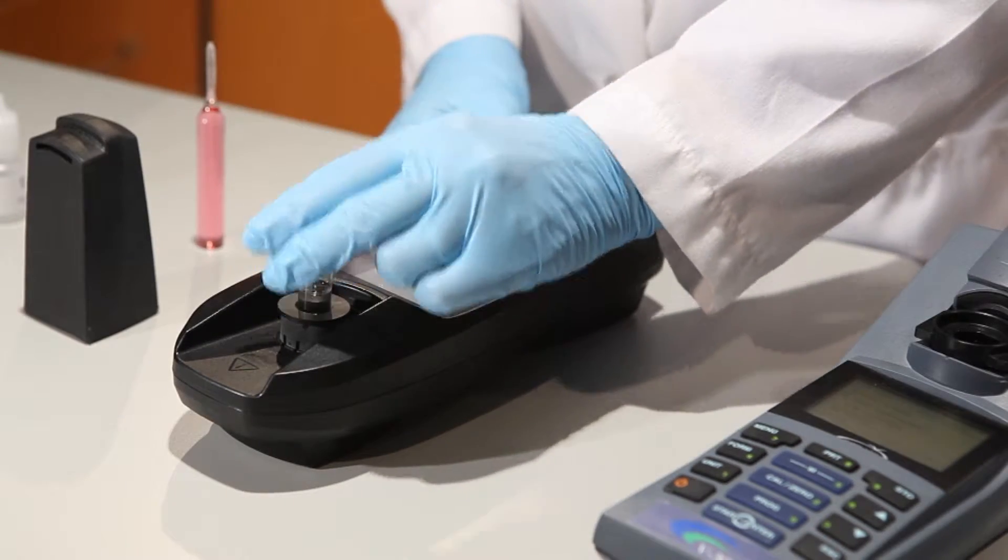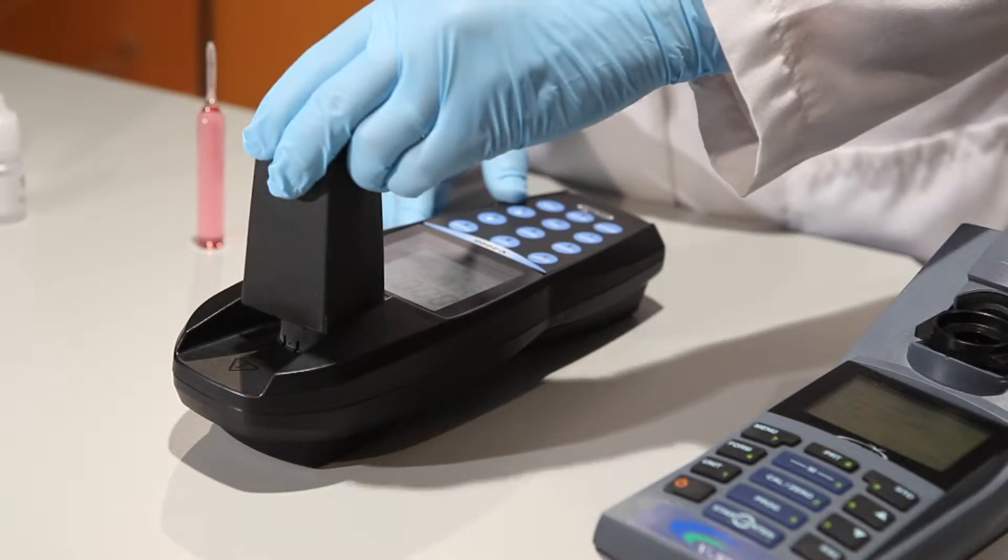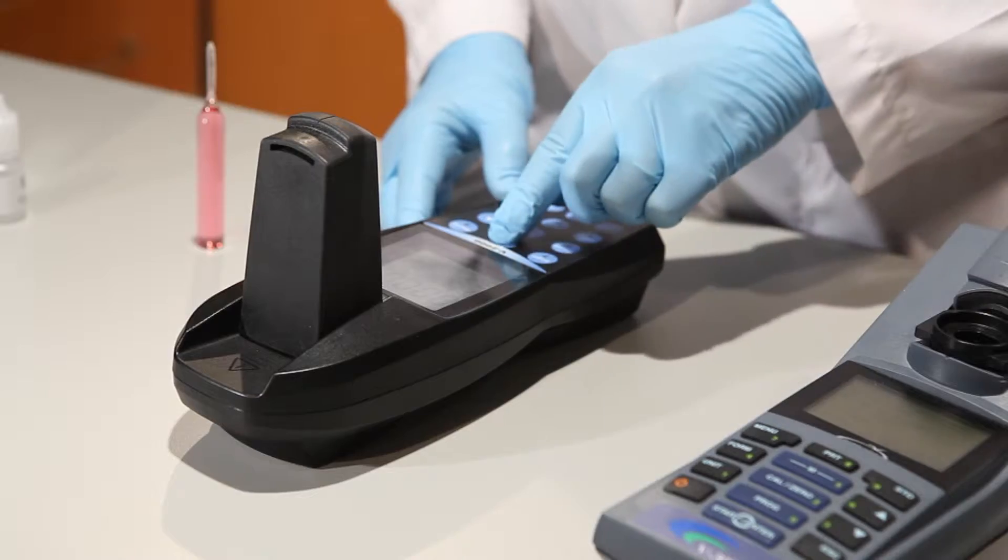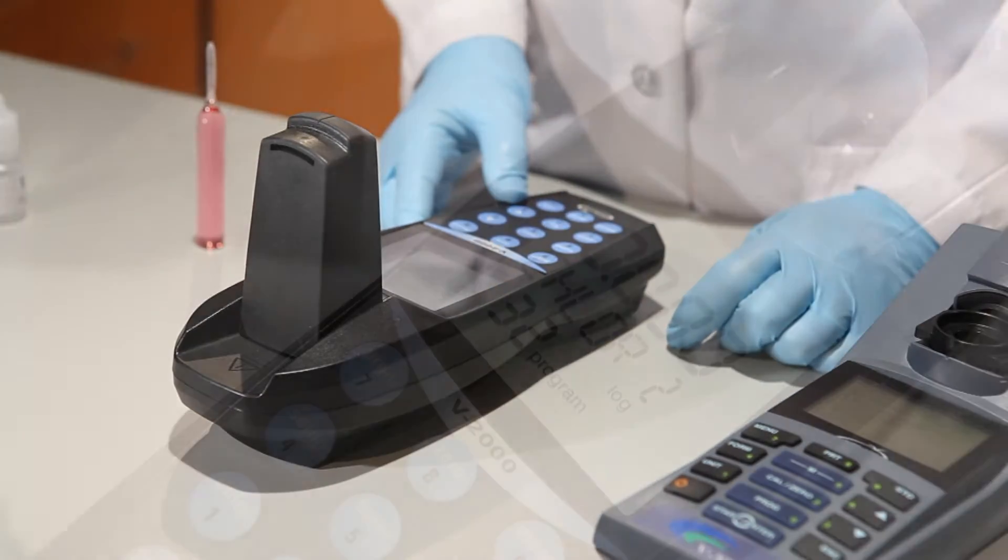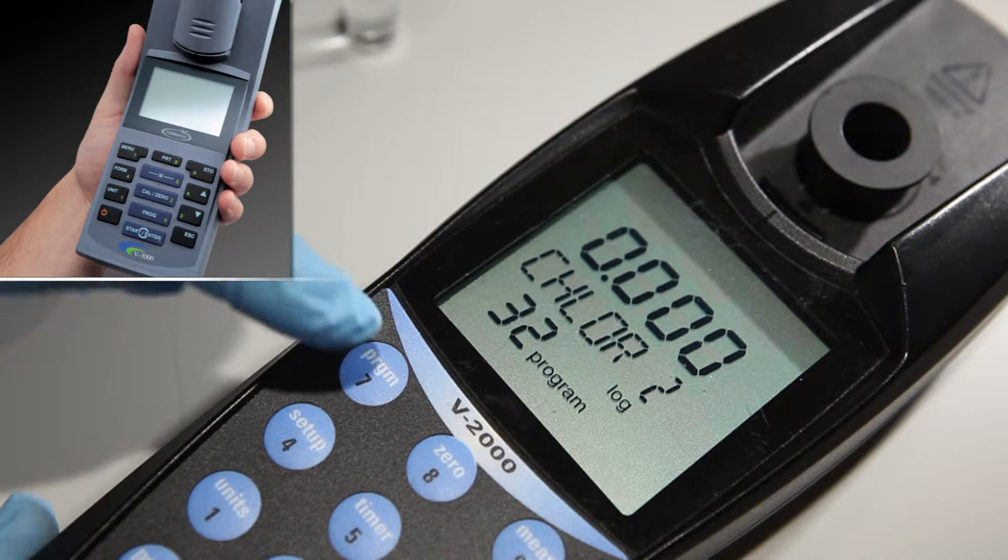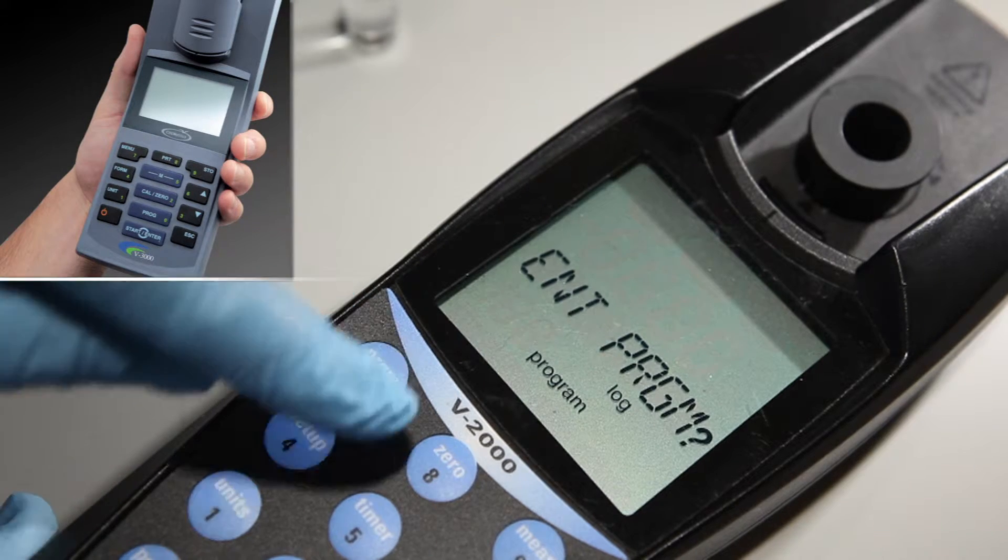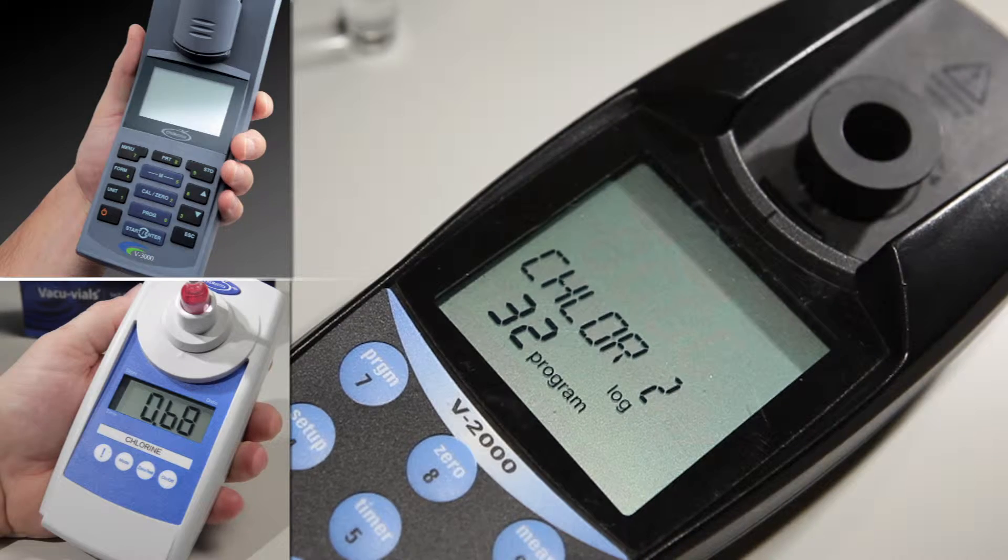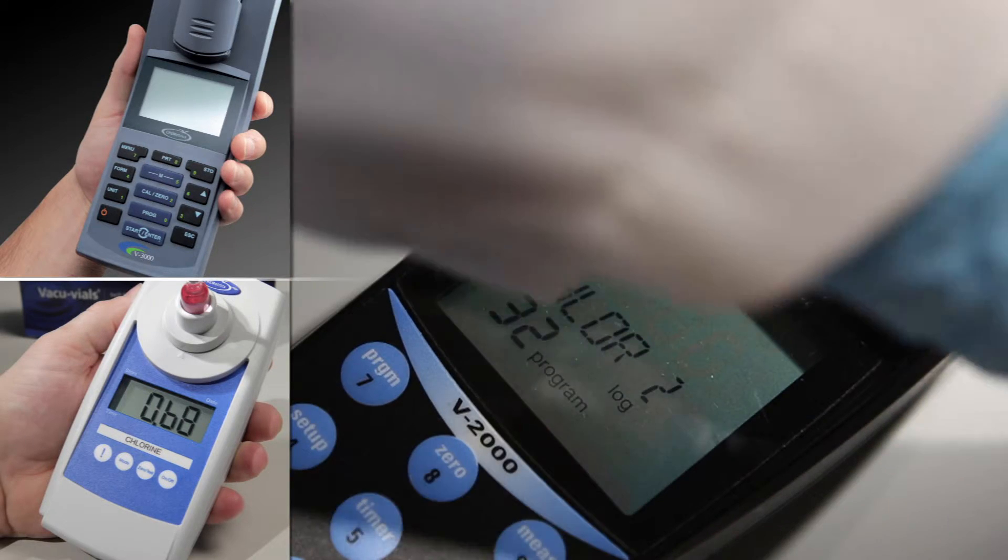Insert the zero ampule into the sample cell compartment. Cover the zero vial with the light shield and press the zero key. For the V2000 and V3000 multi-parameter photometers, select the appropriate program number. SAM single analyte photometers are factory set for a specific analyte.